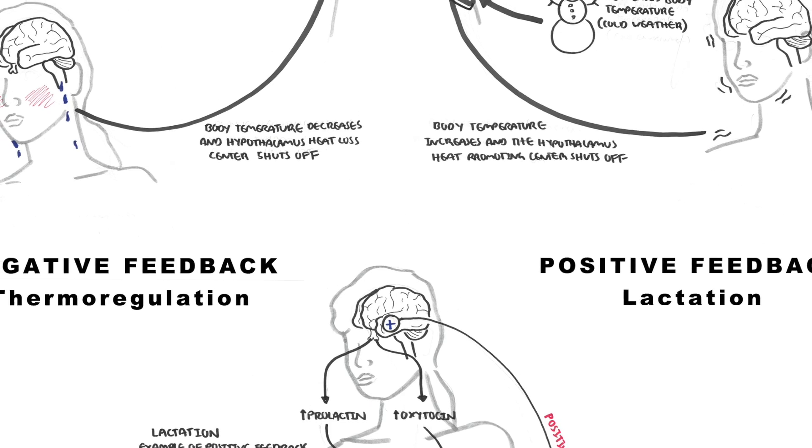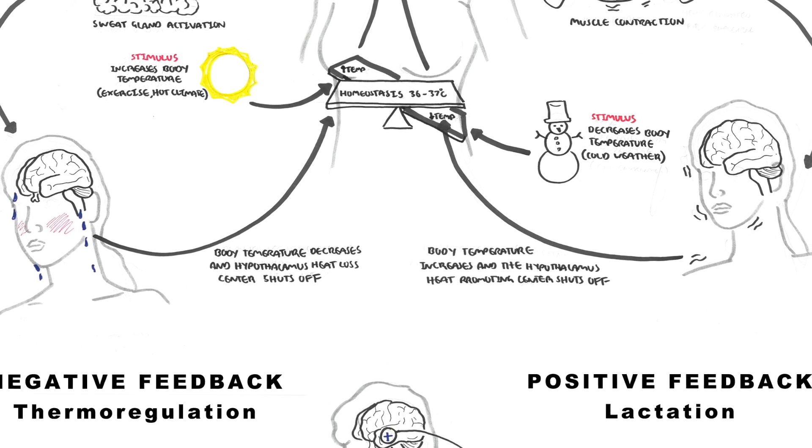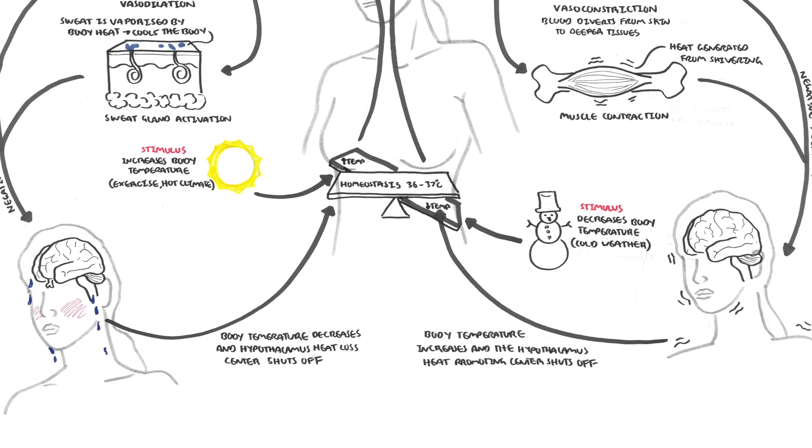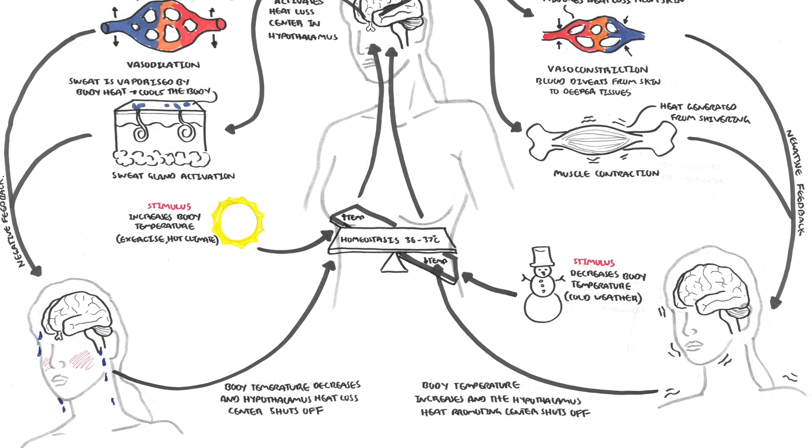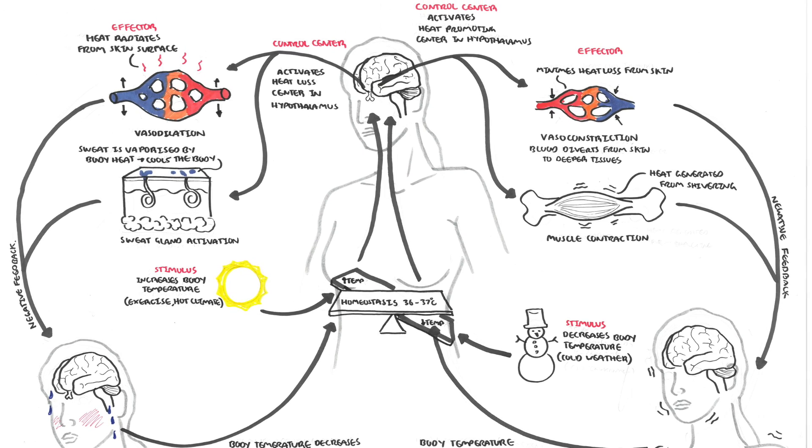So I hope you enjoyed this video on homeostasis. We looked at the two main mechanisms. The main mechanism of homeostasis is through negative feedback, but also there's something called positive feedback, which is important to know.